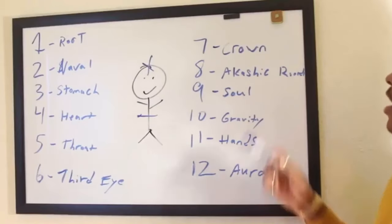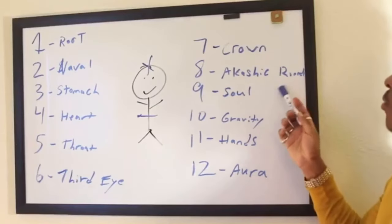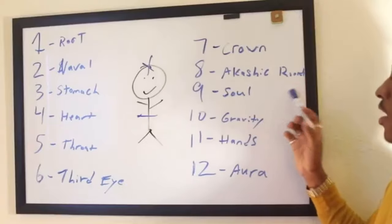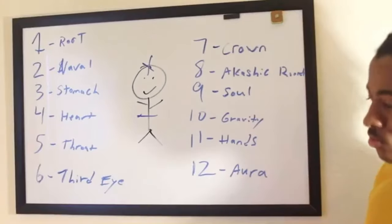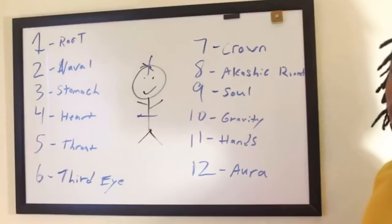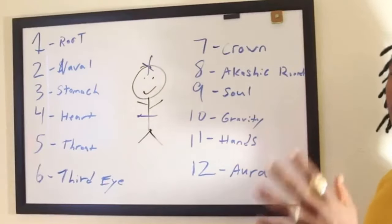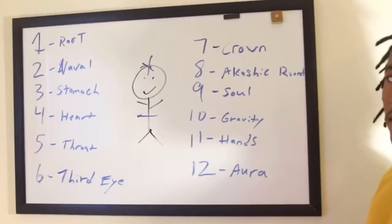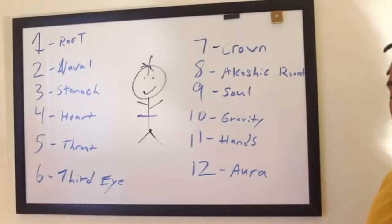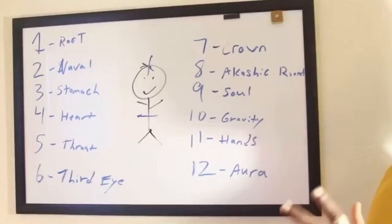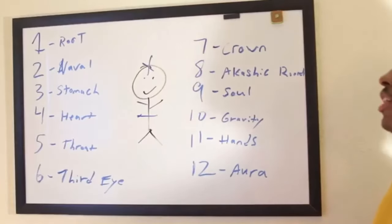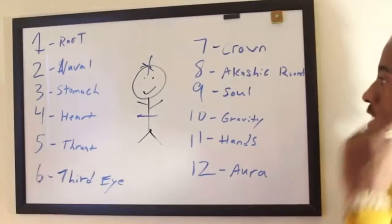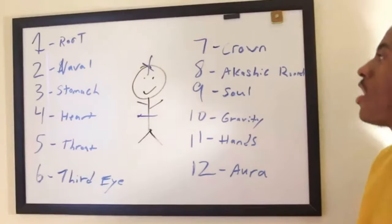Your 8th chakra, which is the Akashic Records, is located approximately 6 inches above the head. So when you close your eyes and you put your hand above your head and you feel that little static electricity, that's actually your Akashic Records.